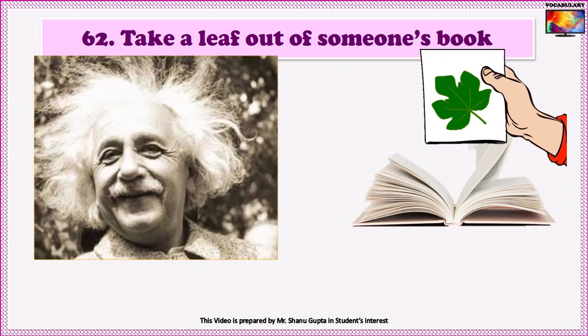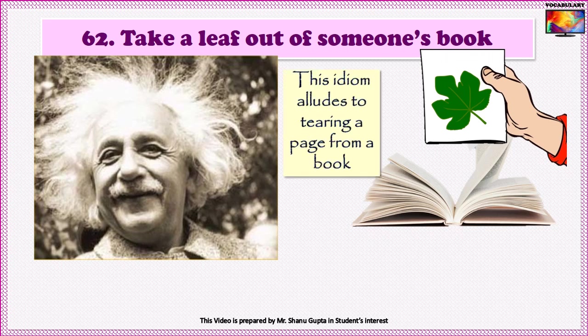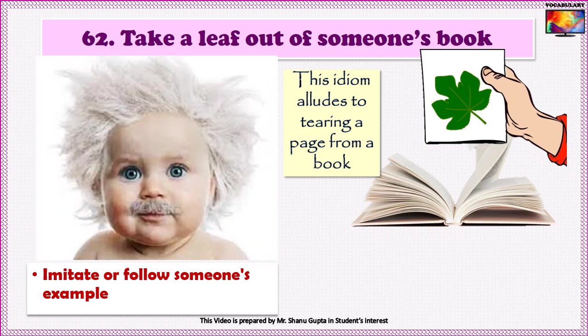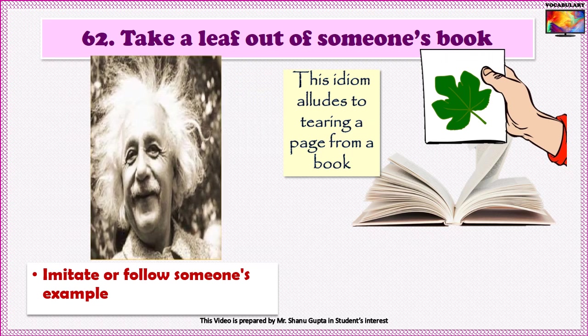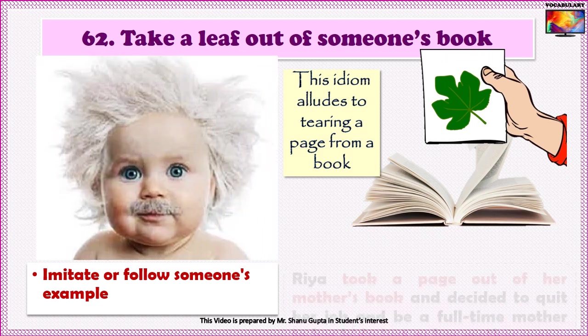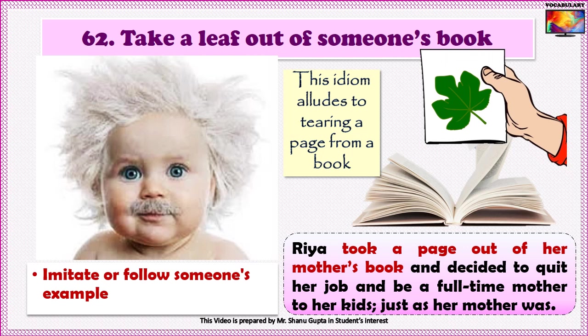Our 62nd idiom is 'To take a leaf out of someone's book.' This idiom alludes to tearing a page from a book, and such a leaf would probably highlight the best part of the book — something you are impressed with. So the idiom means to imitate or follow someone's example. For example, a child who is too impressed with Einstein might want to be a scientist one day — that is to say, he is taking a leaf out of Einstein's book. Another example: 'Ria took a page out of her mother's book and decided to quit her job and be a full-time mother to her kids, just as her mother was.'